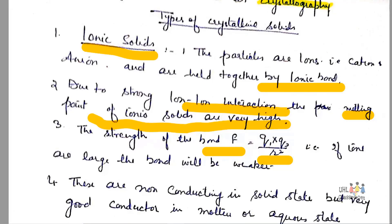There are different types of crystalline solids. The first one is ionic solid. In ionic solids, the particles are ions — cations and anions — and they are held together by ionic bonds. Due to the strong ion-ion interaction, the melting point of ionic solids is very high.